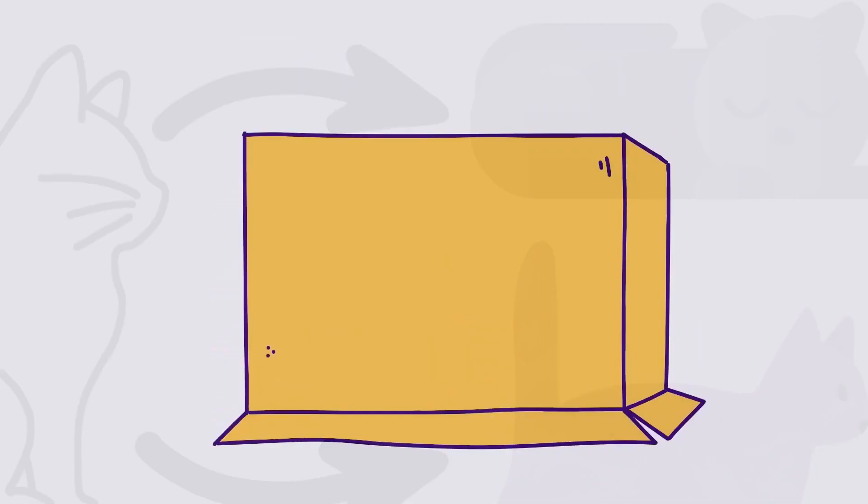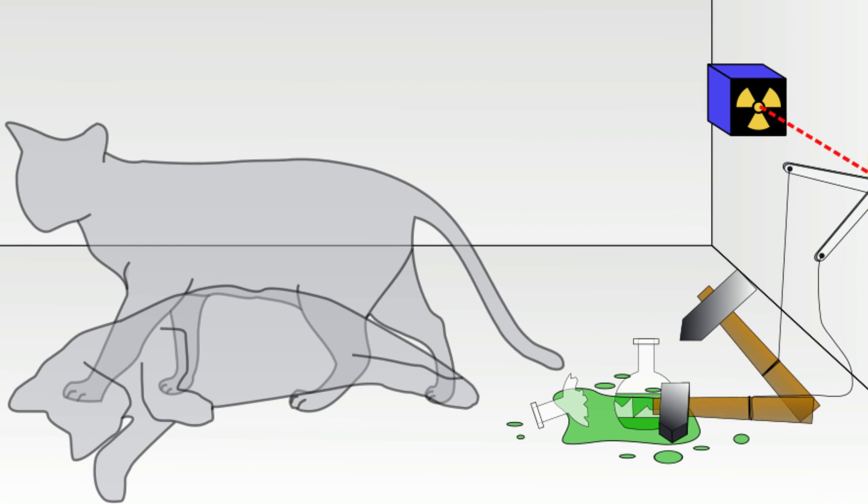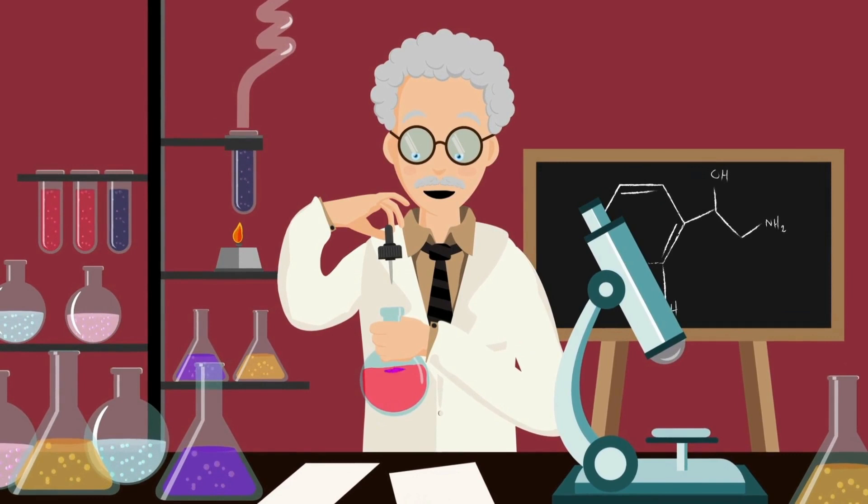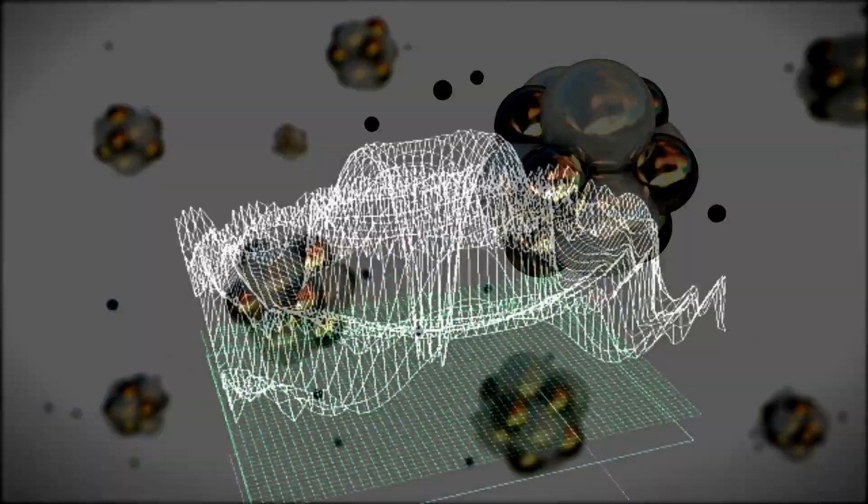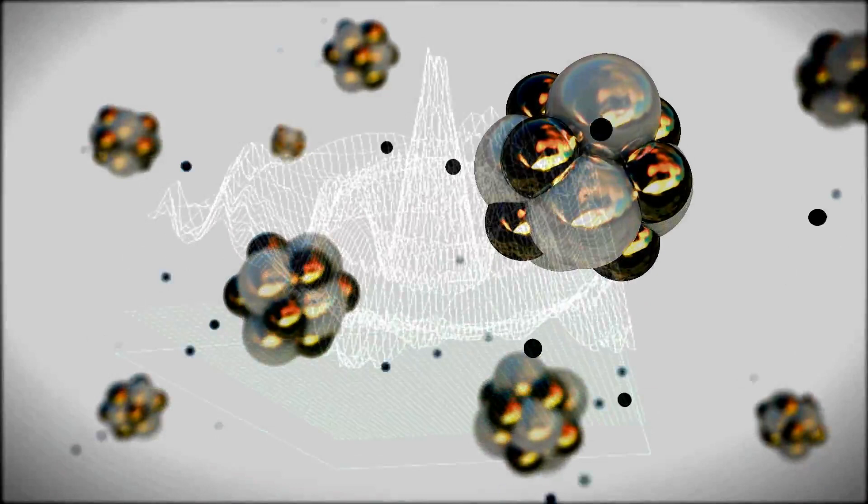As discussed earlier, the experiment serves to illustrate the absurdity of the Copenhagen interpretation of quantum mechanics, which proposes that a system's superposition collapses into a definite state when observed. In this scenario, the act of opening the box and observing the cat would cause the system to collapse into either an alive or dead state.